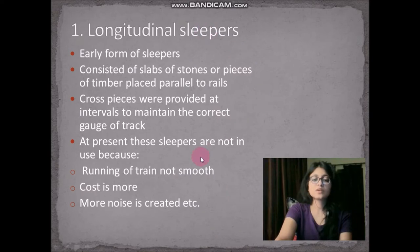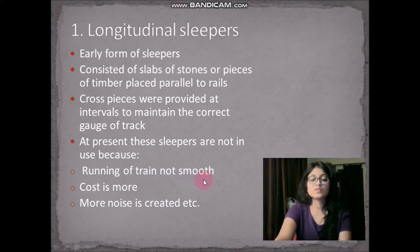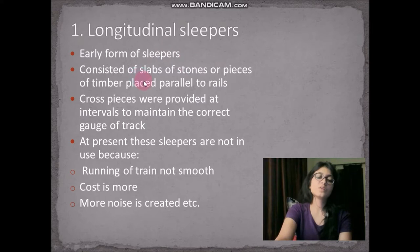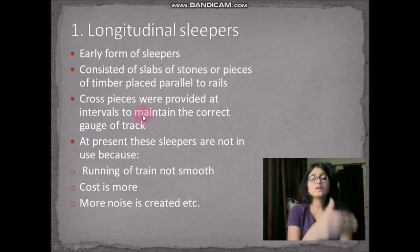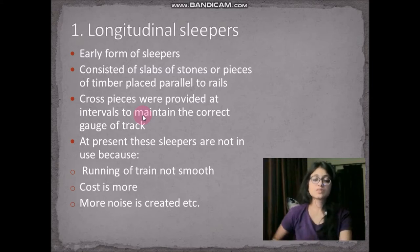Longitudinal sleepers are obsolete — they are not used anymore because running of the train was not smooth, cost was more, and a lot of noise was created. Cross pieces were provided to maintain gauge, but these disadvantages led to their discontinuation.